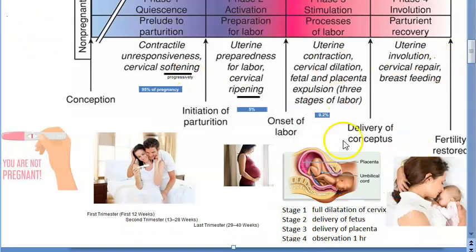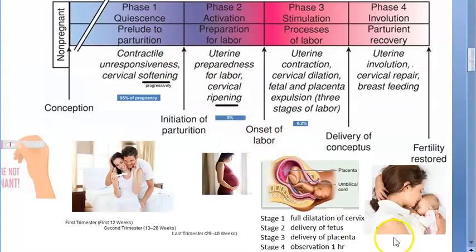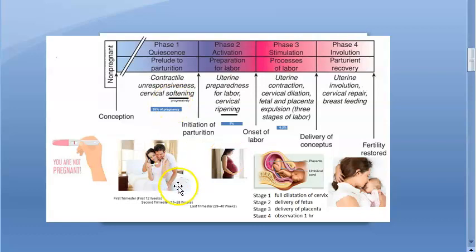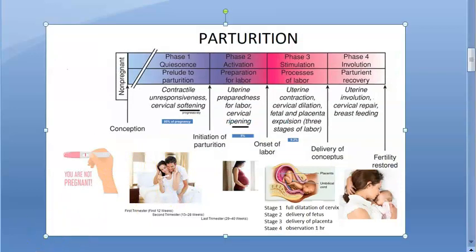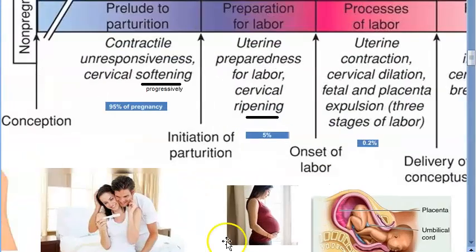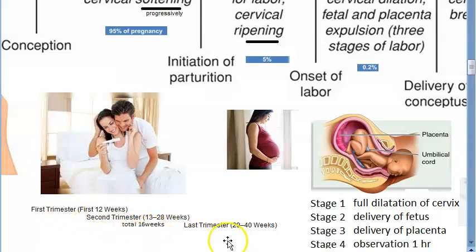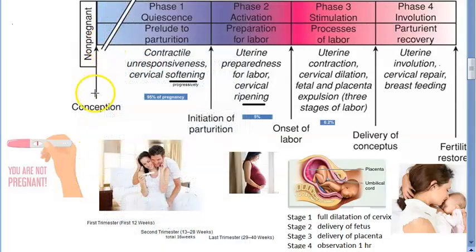This entire thing is parturition — under that you have all the phases, the trimesters, the stages of labor. Note that the second trimester has 16 weeks; the first and last have 12 weeks each. If you calculate, the total becomes 40 weeks.